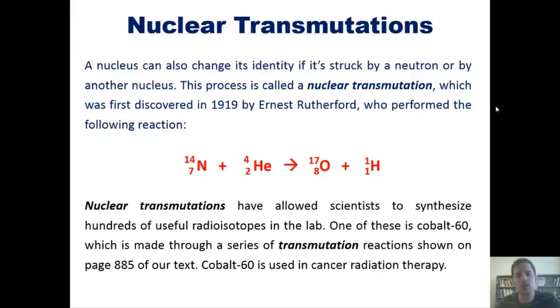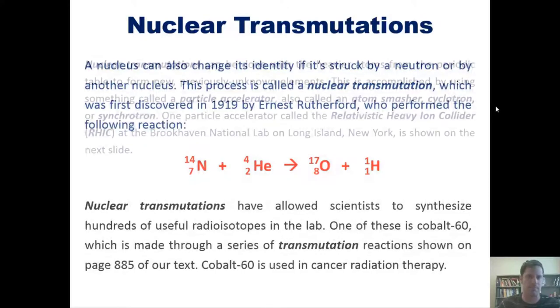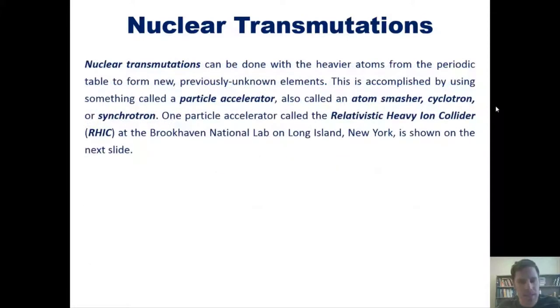He transformed some of those into oxygen-17 and hydrogen-1 atoms. Nuclear transmutations have allowed scientists to synthesize hundreds of useful isotopes in the lab. One of these is cobalt-60, which is made through a series of transmutation reactions shown on page 885 of our text. Cobalt-60 is used in cancer radiation therapy.